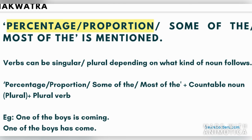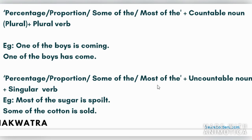In your sentence, you will have to check whether the noun is countable or uncountable. If it is countable, you will use a plural verb. For example, 'One of the boys is coming' — because one boy is coming. If it is '40% of the boys,' then 'are coming.' For uncountable nouns, the same rule applies — you use a singular verb. As I have written, 'Most of the sugar is...' — sugar is uncountable, so we use a singular verb.